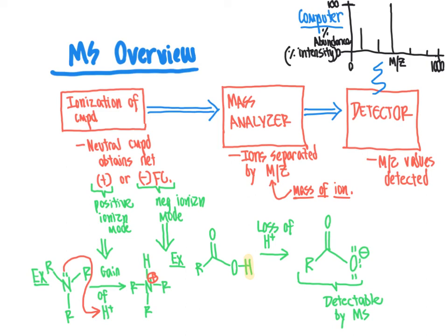In the next video, we will look at the ways that compounds are ionized for mass spectrometry, and then the video after that will cover the different types of mass analyzers and how we separate ions based on their mass to charge ratio. Mass spectrometry is an extremely important tool in chemical biology because it allows us to detect a variety of classes of biomolecules and can be used quantitatively to determine the relative amounts of biomolecules in one sample versus another.